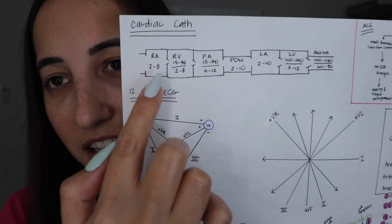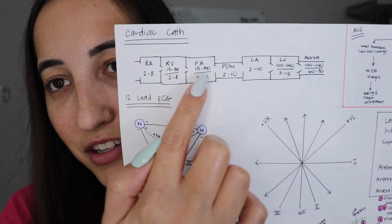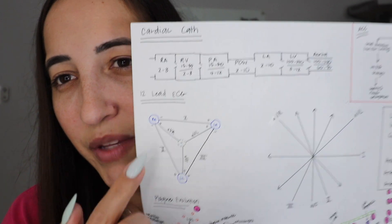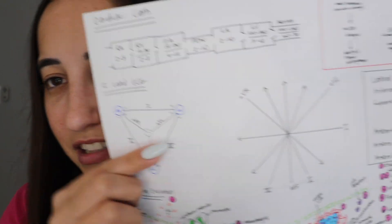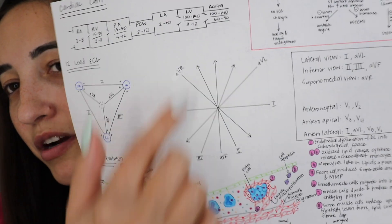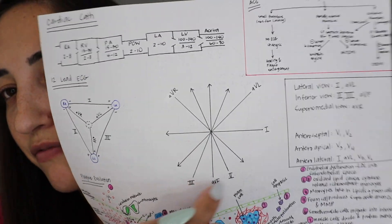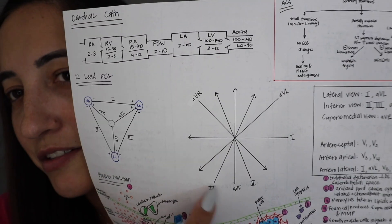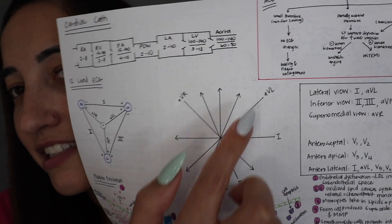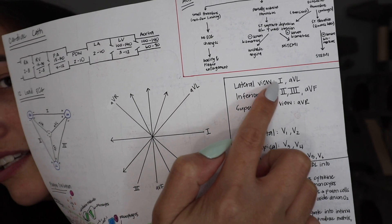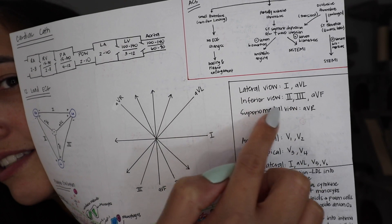Then I have here the pressures in the right atrium, right ventricle, and pulmonary artery — the different pressures. Then here, this is the EKG leads, where they're crossing and what they're picking up. So down here, if there's an infarct in the inferior portion of the heart, you'll see that in these leads. And the lateral portion — you'll see issues in those leads. So that way I know which leads are the problem.